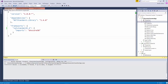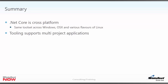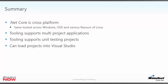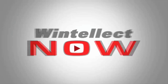.NET Core is a cross-platform toolset from Microsoft with the same toolset running across Windows, OS X, and various flavors of Linux. The tooling supports multi-project applications, test projects, and loading into Visual Studio — standard editions or Community Edition with the right update. We've seen how to mix .NET Core projects with other .NET projects, combining a .NET 4.6.1 console application with a .NET Core application. That was an introduction to .NET Core — thank you, I hope you enjoyed the class.